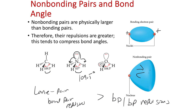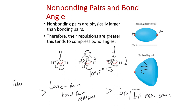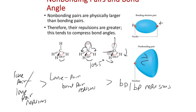For water, we have lone pair–lone pair repulsions — the two lone pairs are close together and repel each other more, pushing the hydrogen bonds even closer together. So we can predict that water has greater repulsions on its lone pairs, reducing the bond angle to less than the 107 degrees seen in ammonia, closer to 104.5 degrees. So the order is: lone pair–lone pair repulsions are greater than lone pair–bond pair, which are greater than bond pair–bond pair repulsions.